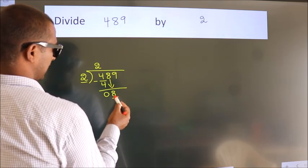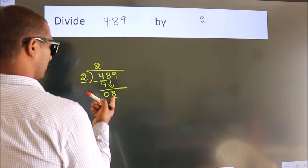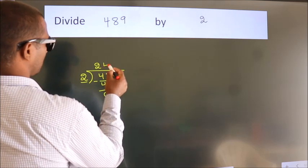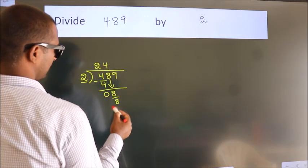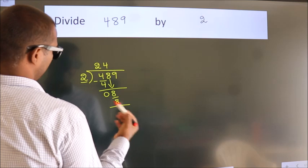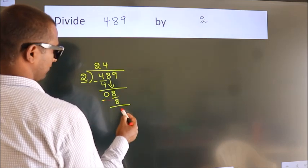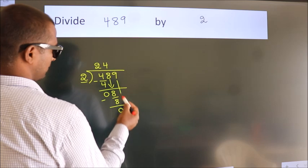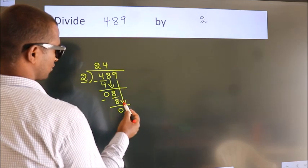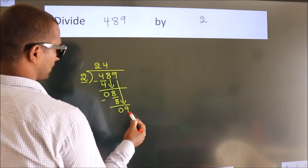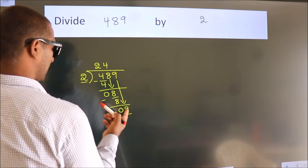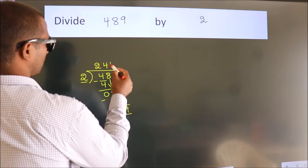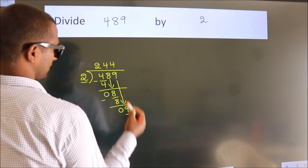Bring down 8. In the 2 times table, 2 fours are 8. Subtract to get 0. Bring down the next number, 9. The closest number to 9 in the 2 times table is 2 fours are 8.